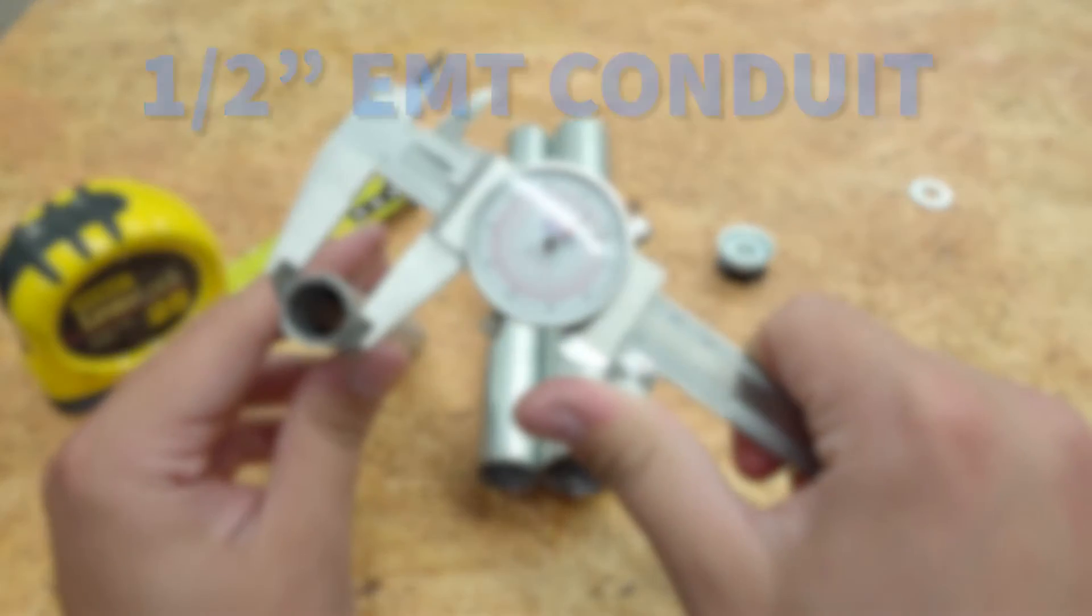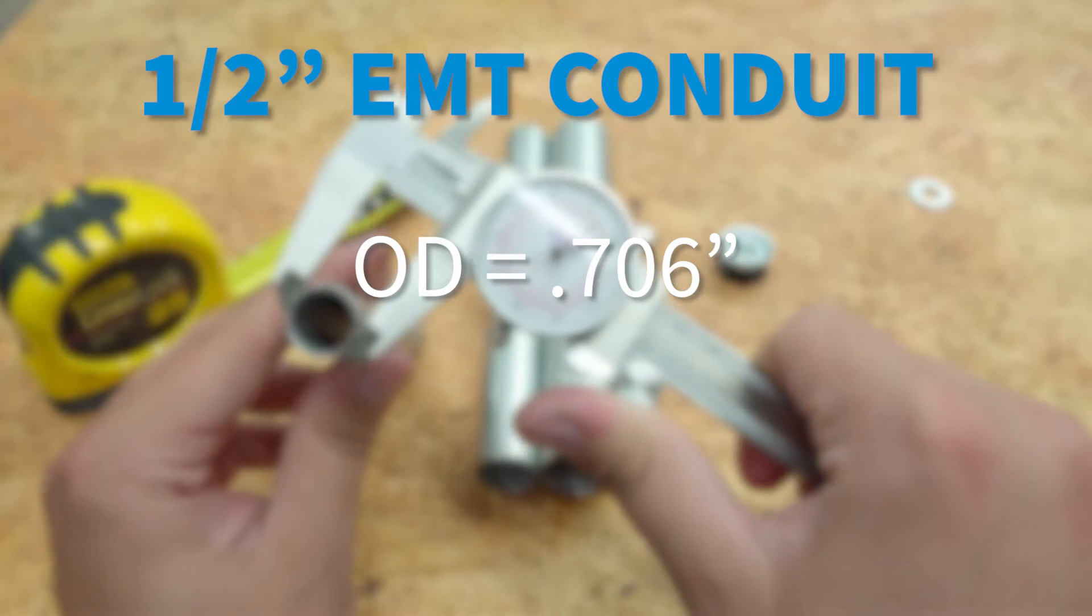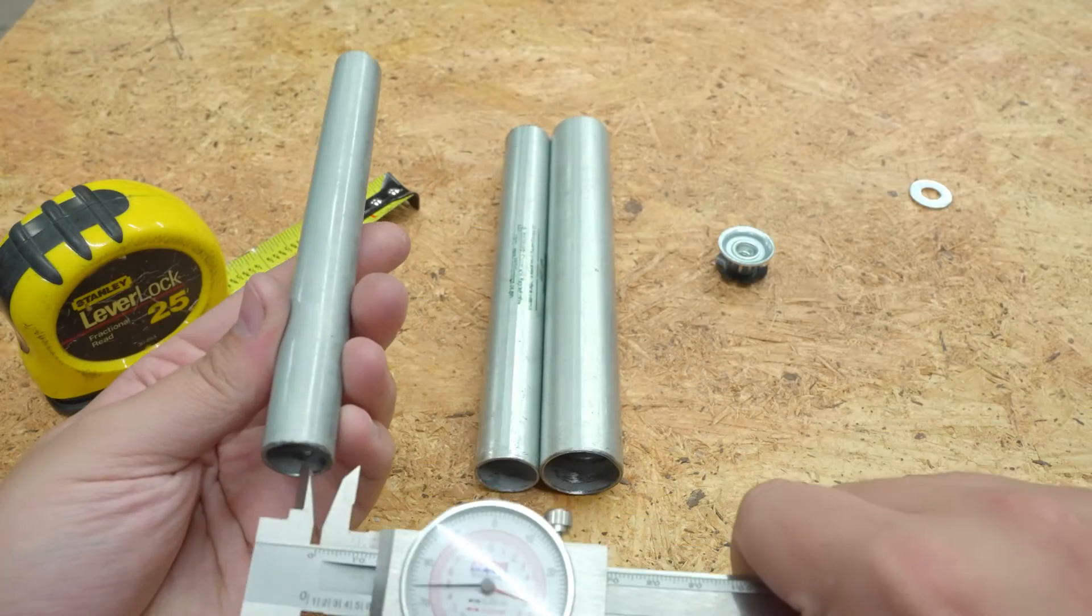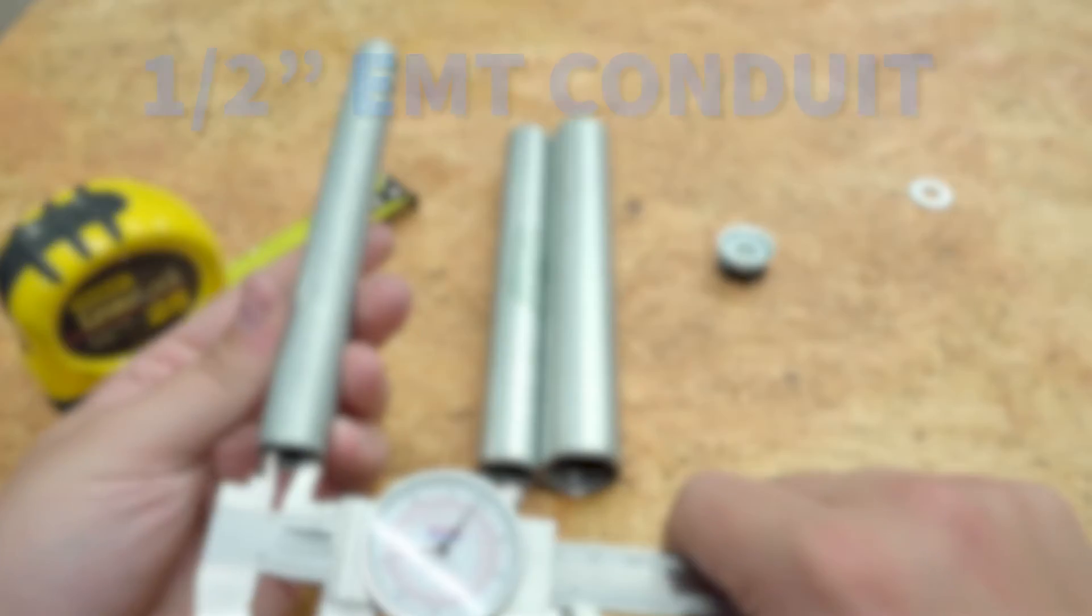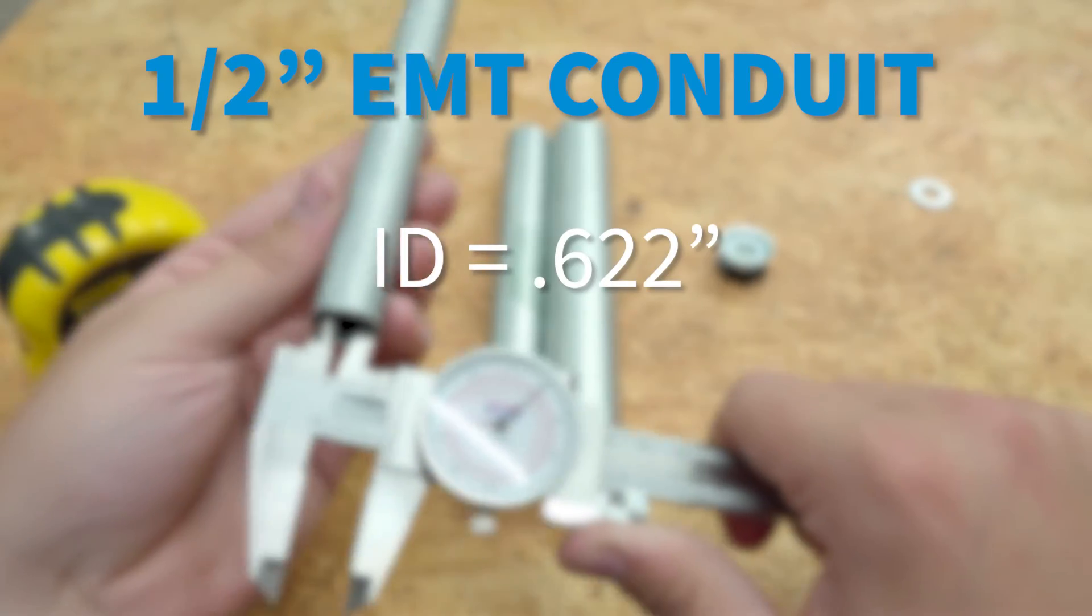The outside diameter is 0.706 inches, and the inside diameter is 0.622 inches.